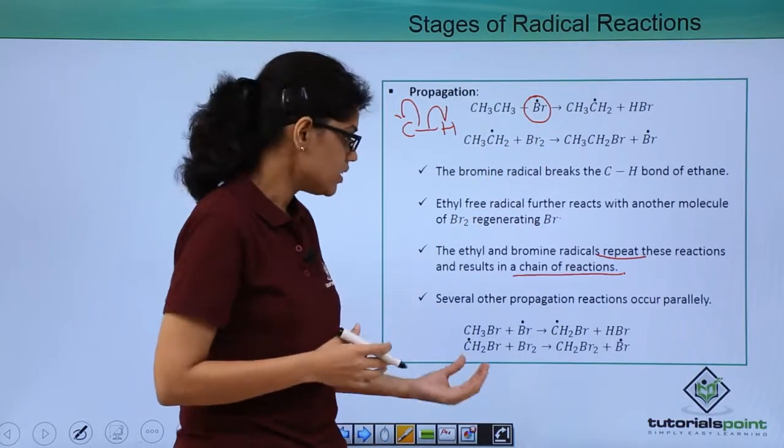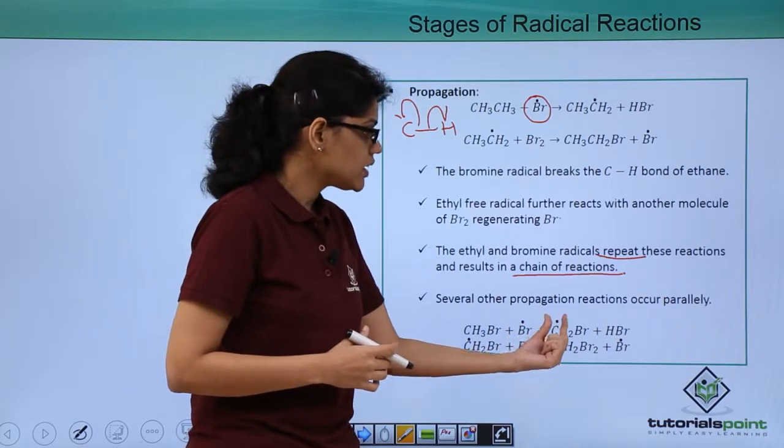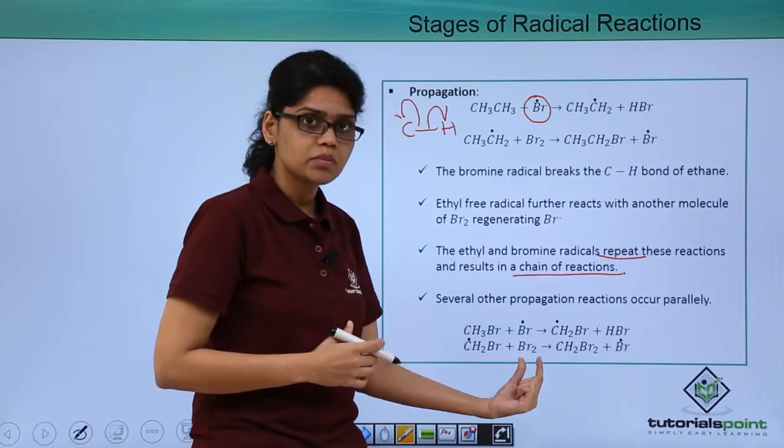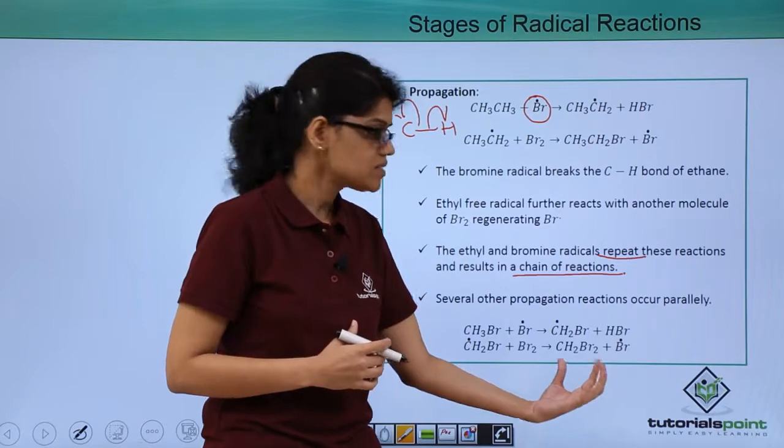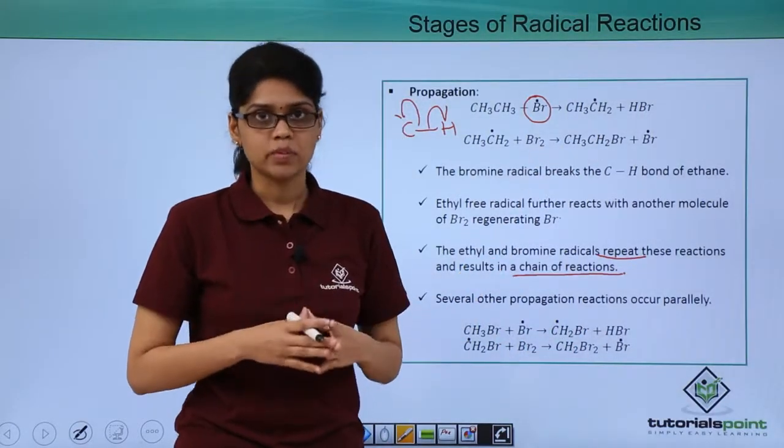The side reactions obtained include CH3Br, which reacts with another bromine radical giving us this particular radical and HBr. This radical can again react with another bromine molecule, regenerating Br dot, and the product obtained here is CH2Br2 instead of the reactant that we are looking at, which is ethyl bromide.